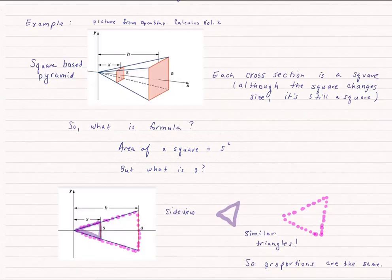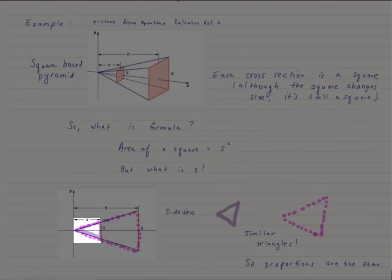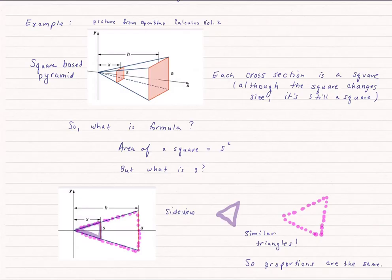If we think about this pyramid, but we look at it from the side view, we see that we have two similar triangles. We have the triangle that goes all the way to x, and the width of that square is s. We also know when we let x go all the way to h, then that side of the square is a. That's given to us. That's the base of the pyramid.